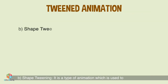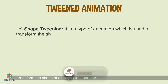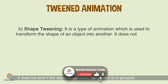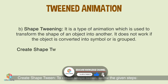Shape Tweening: It is a type of animation used to transform the shape of an object into another. It does not work if the object is converted into a symbol or is grouped.